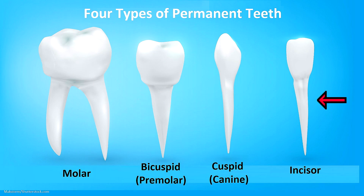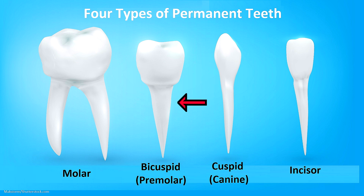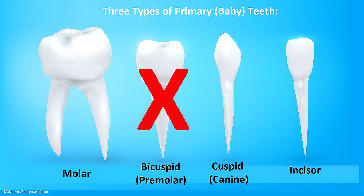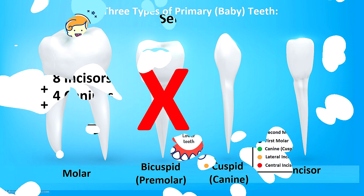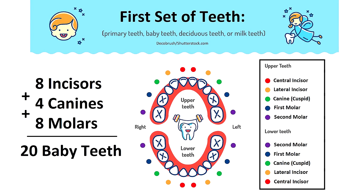Now let's talk a little bit about the different types of teeth, and humans have four of them. There are incisors, cuspids — which are also called canines — bicuspids, which are also called premolars, and then molars. However, only three types of teeth appear in the baby teeth, because those premolars do not develop with that first dentition. Instead, baby teeth are going to include a total of 20 teeth: eight incisors, four canines, and eight molars.